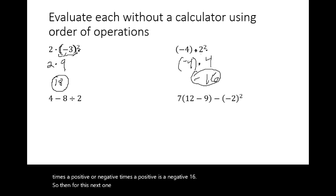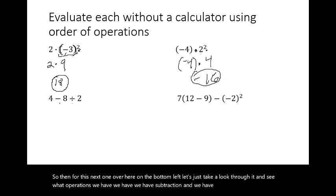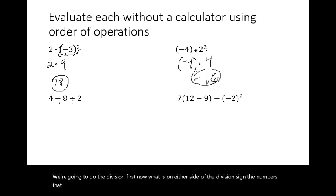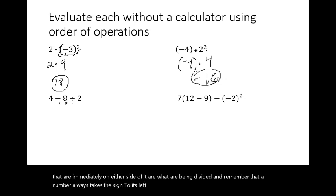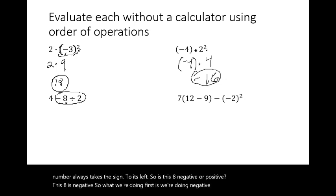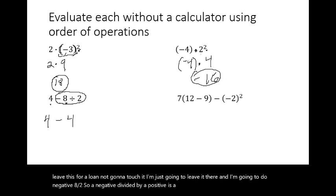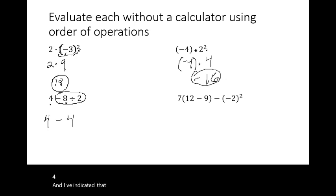For the next expression with subtraction and division: division comes before subtraction. The numbers on either side of the division sign are what's being divided, and a number always takes the sign to its left. So we do negative eight divided by two first, leaving the four alone. A negative divided by a positive is negative four. Then four minus four gives you zero.